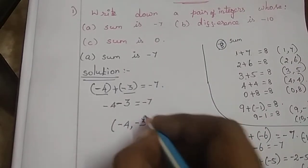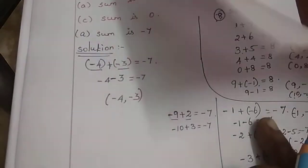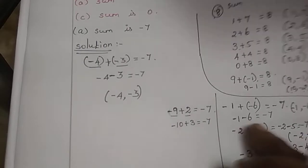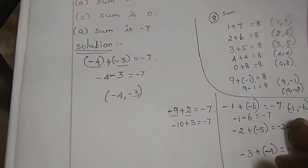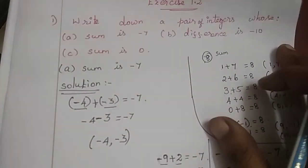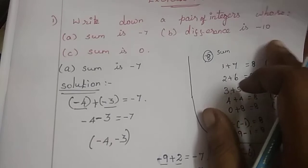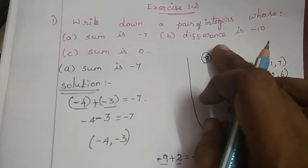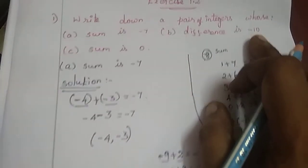So pairs like minus 1, minus 6 and minus 2, minus 7 are valid. Next problem: difference is minus 10.